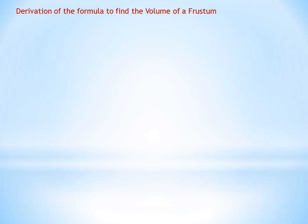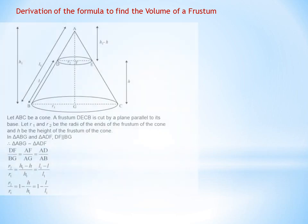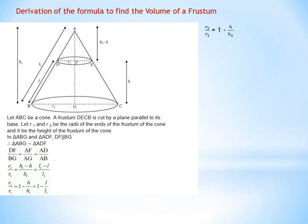To derive the formula for the volume of a frustum, the first part is similar to what we did for curved surface area. The only difference is that for volume we consider the vertical height, not the slant height. So R2/R1 = 1 − H/H1, giving H1 = H·R1/(R1−R2).